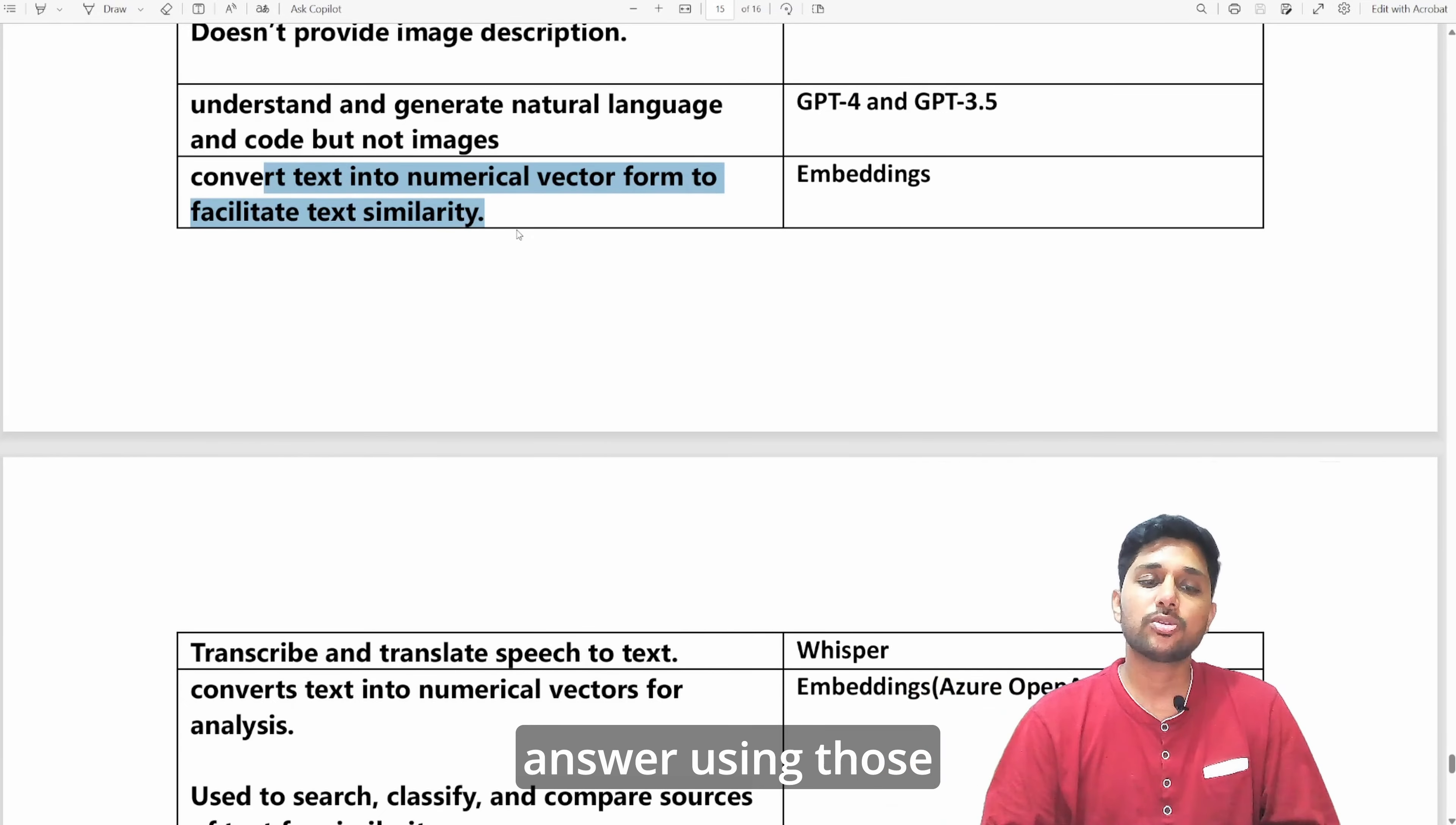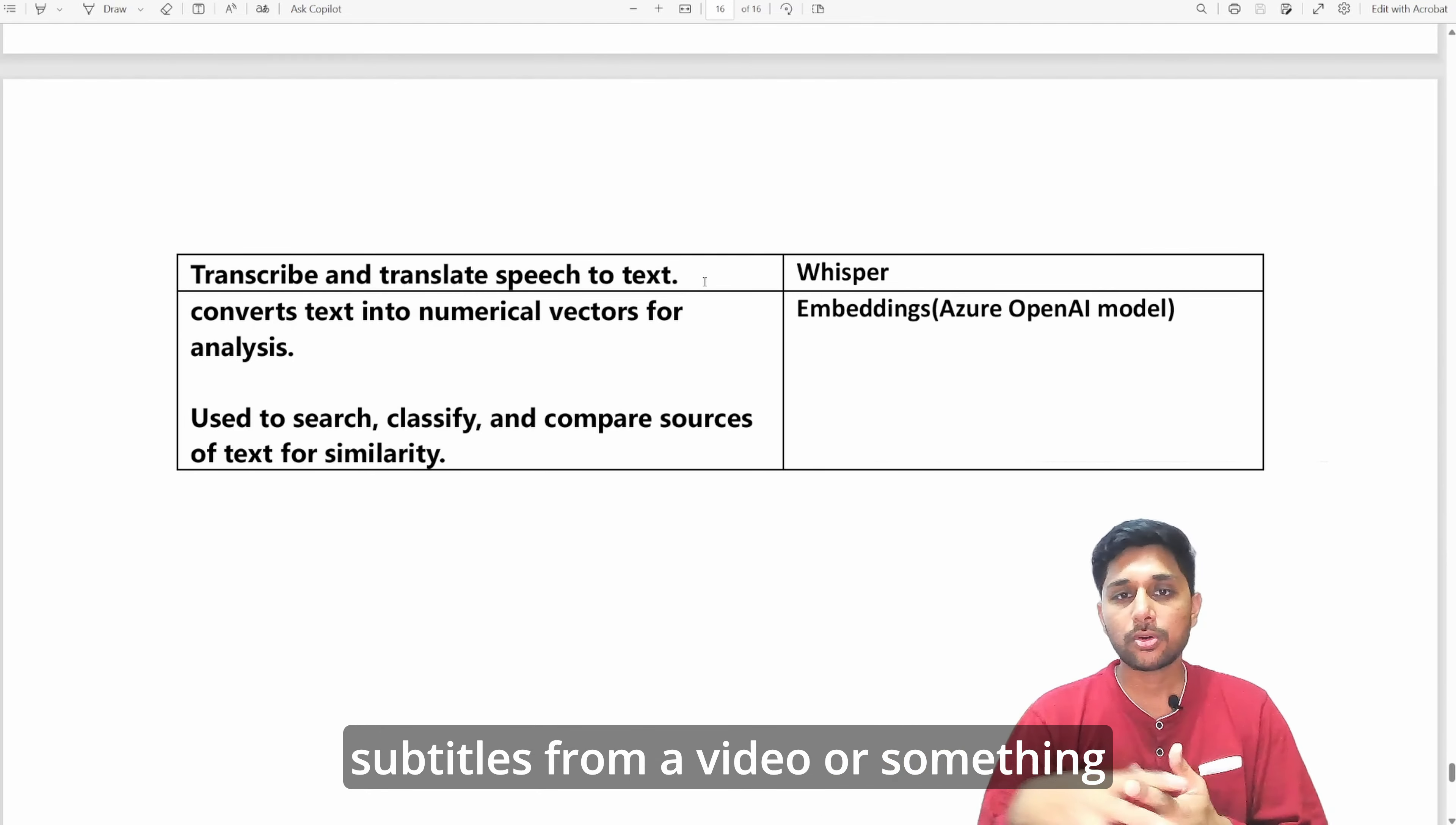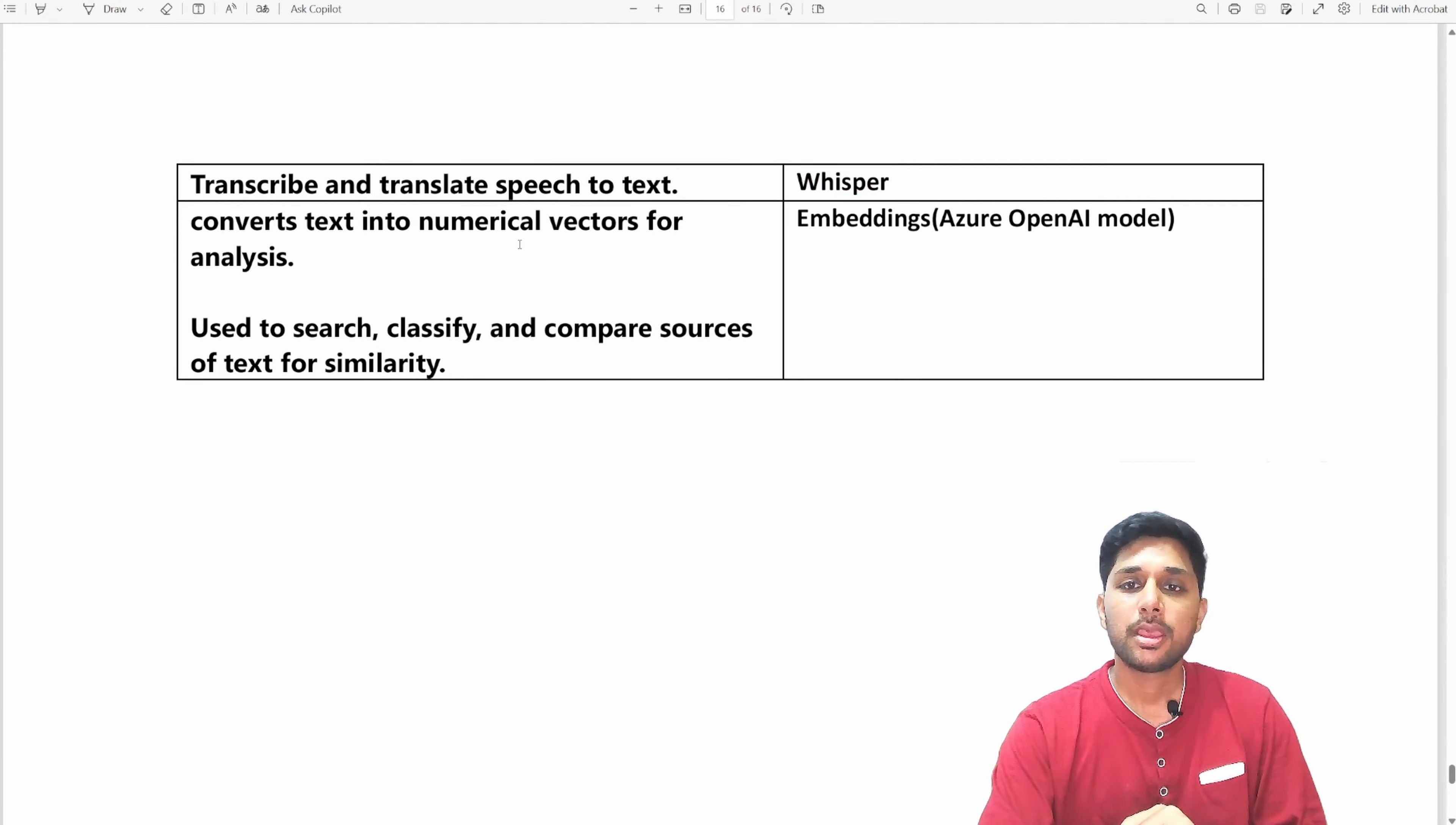If you want to utilize transcribe or translate speech to the text, just like you want to generate subtitles from a video or something like this, or auto generate subtitles, you can utilize Whisper. It is also a feature from OpenAI, just like we have ChatGPT for text generation. But what it does is it transcribes and translates speech to text, that is facilitated by Whisper service.